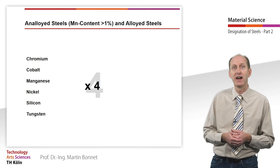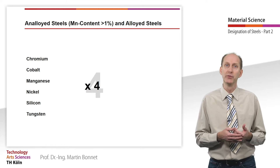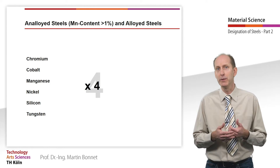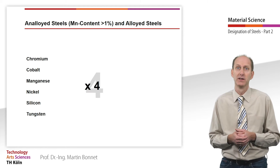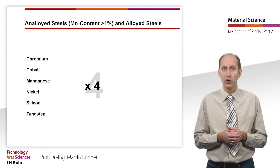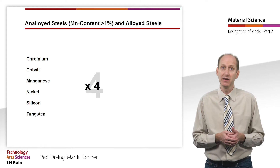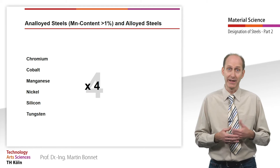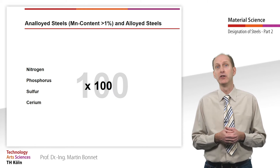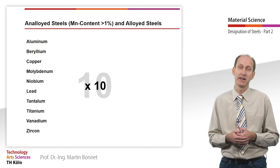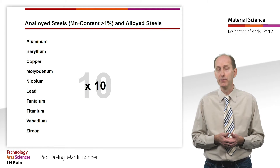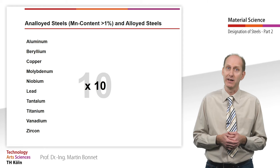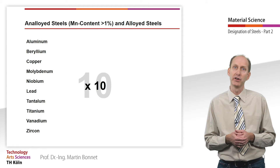As different alloying elements are added in different small amounts, there are several groups with different factors. The objective of these factors is to allow us to work with whole numbers instead of decimals. The average percentage content of chromium, cobalt, manganese, nickel, silicon and tungsten are multiplied by a factor of 4. Nitrogen, phosphorus, sulfur and cerium use the factor 100. The other elements like aluminum, beryllium, copper, molybdenum, niobium, lead, tantalum, titanium, vanadium and zircon are given by a factor of 10. An exception is boron with a factor of 1000.